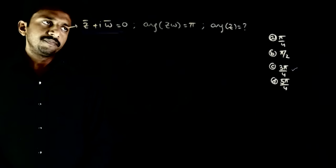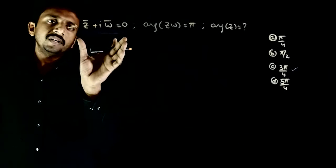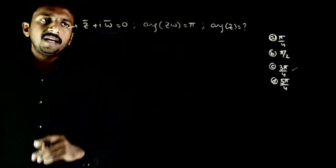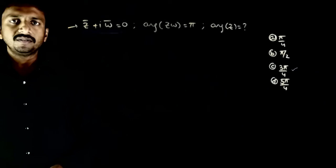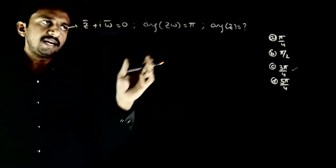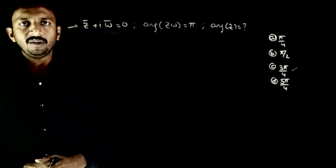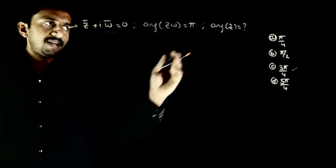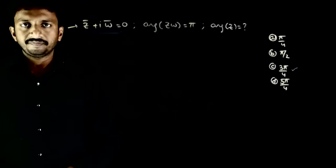Welcome students. This question mein diya hai: z̄ + iω̄ = 0 and argument of zω is equal to π. The argument of z kitna hai?